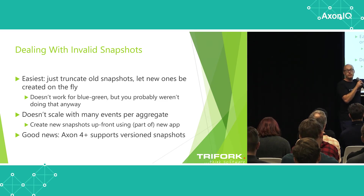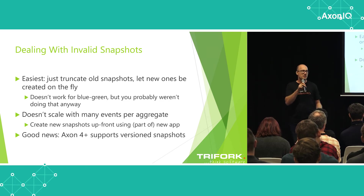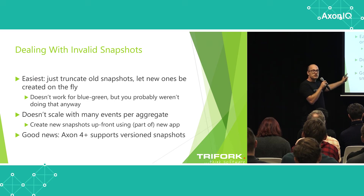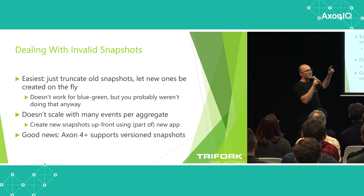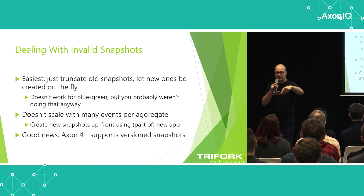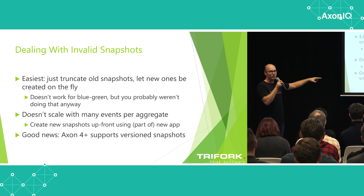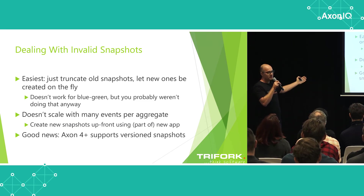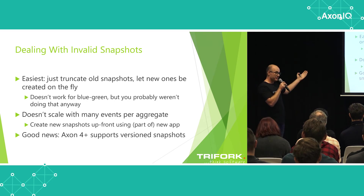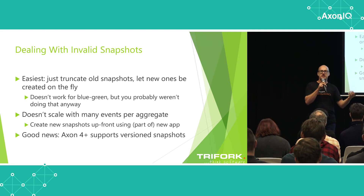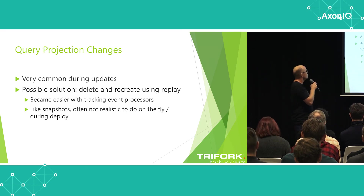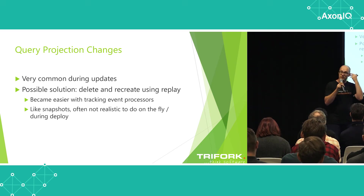However, if you have a lot of events after a couple of years for certain long-lived aggregates, this breaks down — on-the-fly re-snapshotting just doesn't perform well enough. Your whole system will be in a state of shock if you delete all snapshots for a particular aggregate type. So you need to create new snapshots up front, ensuring they're pre-created before your new application is up and running. I learned the day before this conference last year that Axon 4 actually supports having multiple types of snapshots for different versions of your aggregate in the same snapshot table — a really nice feature. But you do have to build a tool to create those snapshots up front.